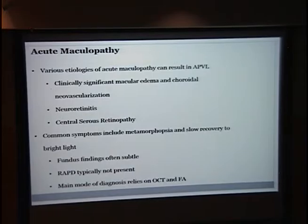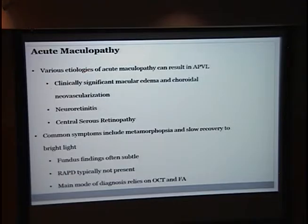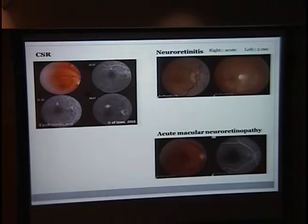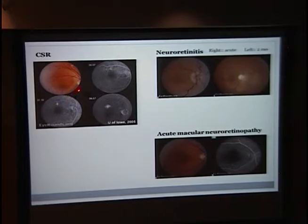Acute maculopathy is a broad category — basically anything that acutely affects the macula can cause this. Typically you can have neuroretinitis, central serous retinopathy, as well as significant macular edema and choroidal neovascularization. Common symptoms are metamorphopsia and slow recovery to light. For the most part the physical exam is actually going to be pretty subtle, so the main mode of diagnosis will rely on OCT and fluorescein angiography. This is a CSR — you can see the classic smoke-stacking on FA as time progresses.